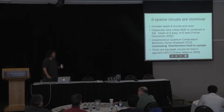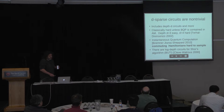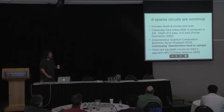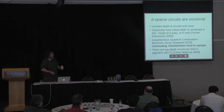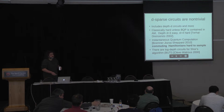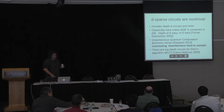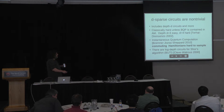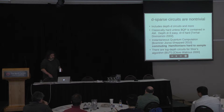D-sparse circuits are disappointingly weak but not useless - they're not trivial. They include all depth-D circuits, and depth-D circuits are hard on a classical computer unless BQP is in AM. Depth D=3 is easy, and Merhal and DiVincenzo showed in 2002 that depth D=4 is hard. Also included is instantaneous quantum computation and commuting Hamiltonians, which are hard to sample classically unless the polynomial hierarchy collapses.